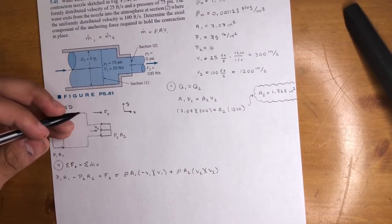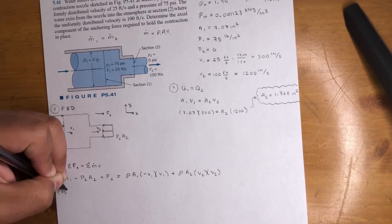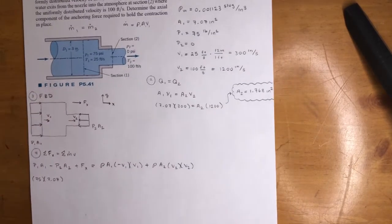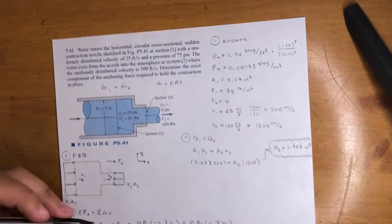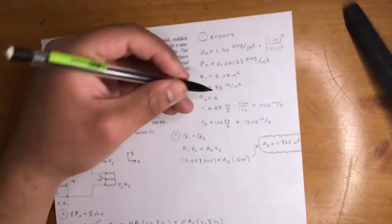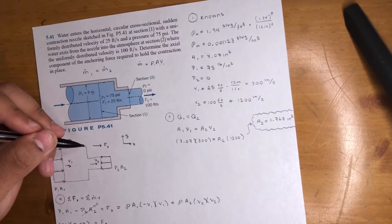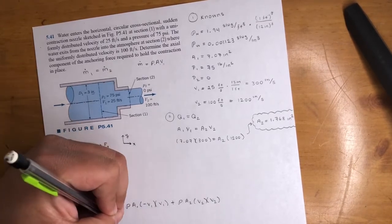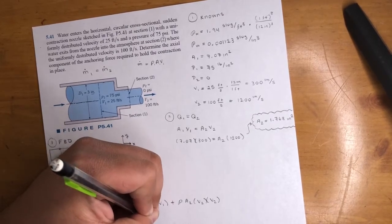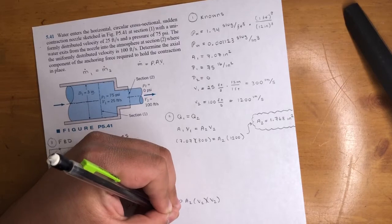We could go ahead and start plugging in. Let's go ahead. And pressure 1 is 75 times 7.07. I mean, I'm on my paper. But, I'm just plugging in the numbers. We have P1, A1. Oh, this goes to 0. That's easy. Cool. So, 0. Because P2 is 0.